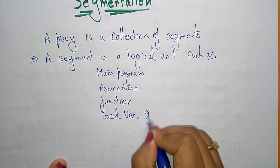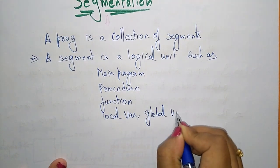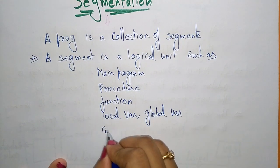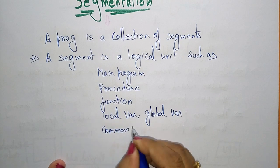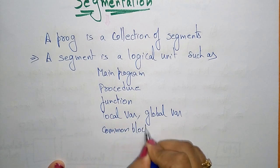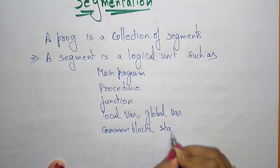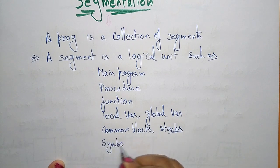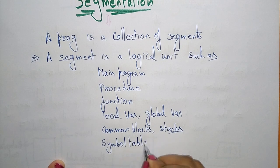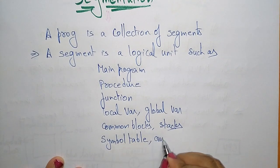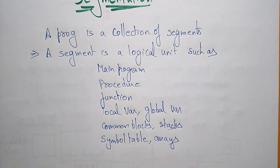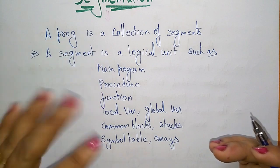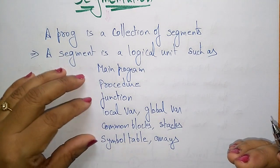Local variables, global variables, common blocks, or even stacks present in the program, or the symbol tables we use in the program or a process, or even arrays — these are all called segments. So segments are nothing but logical units consisting of all these modules.